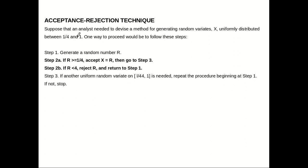Suppose the analyst needs to devise a method for generating random variates x, which are uniformly distributed between 1/4 and 1. One way to proceed would be the following three steps.